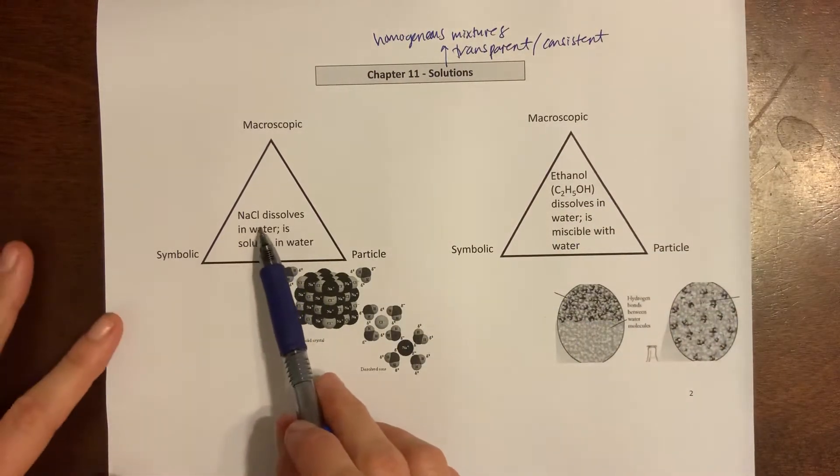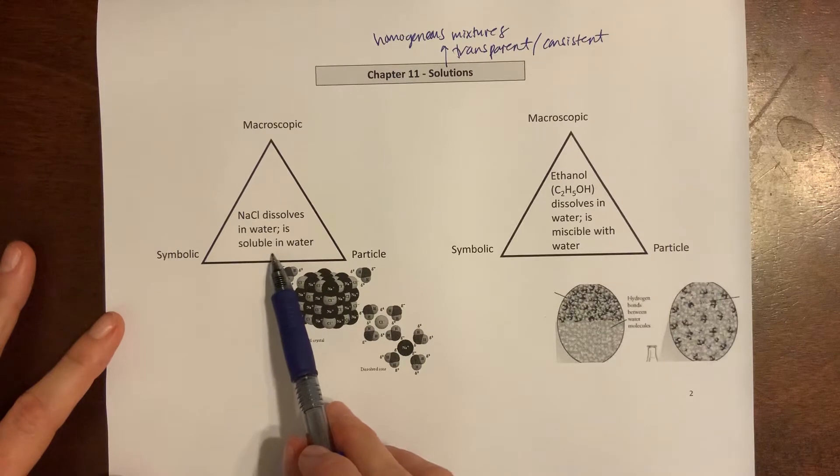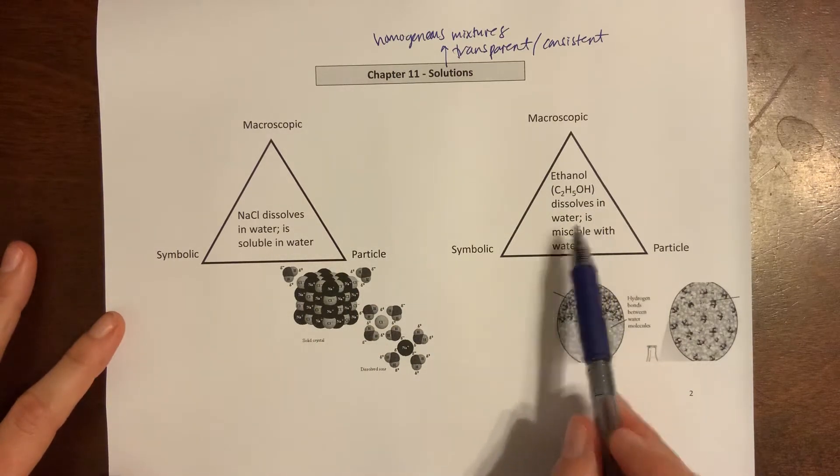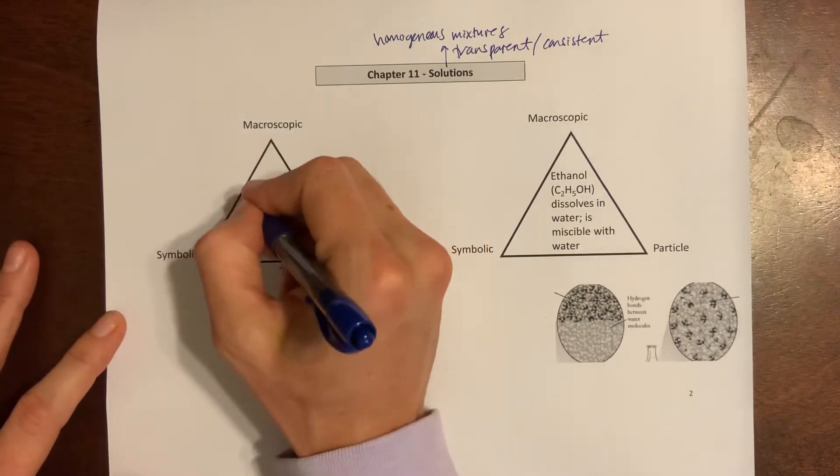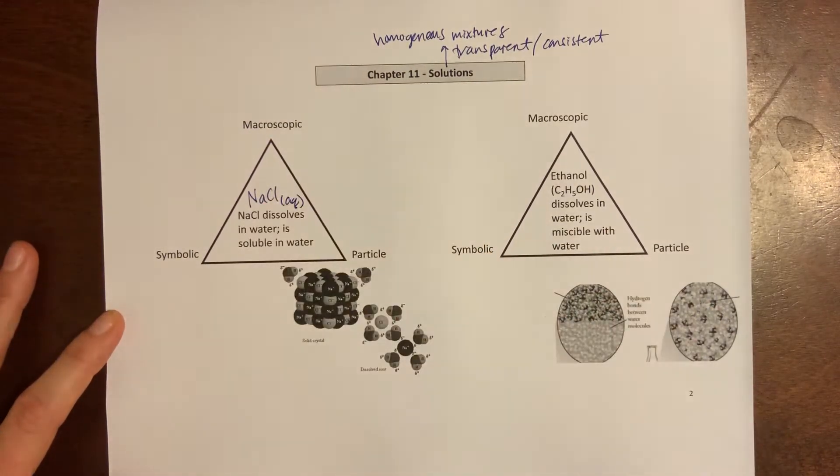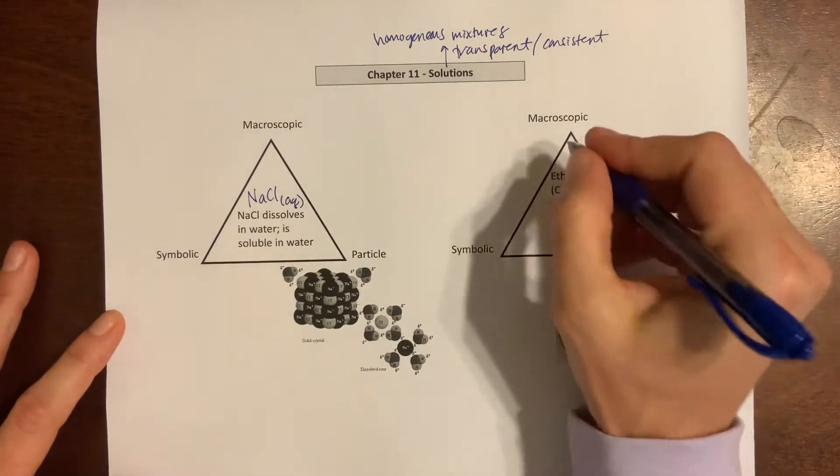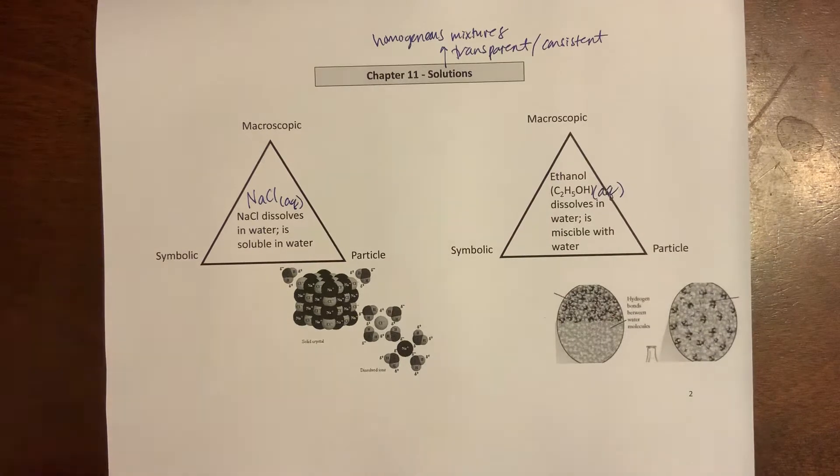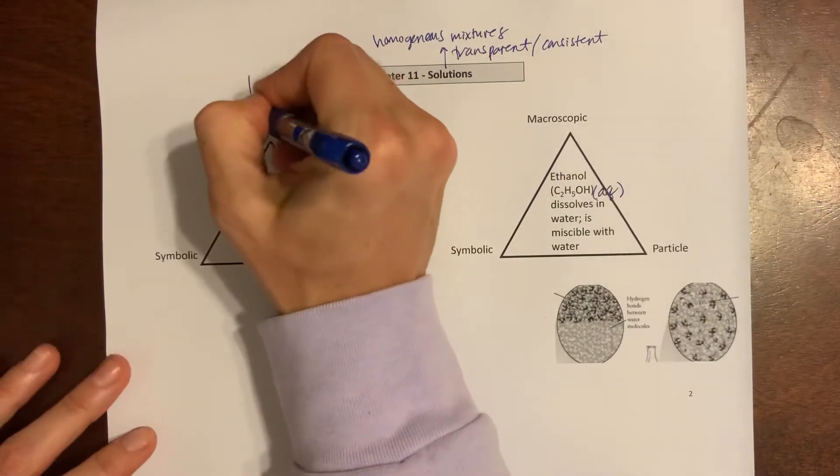We're going to look at table salt NaCl dissolved in water and we're going to look at ethanol dissolved in water as well. So this would be if I wrote it symbolically NaCl in the aqueous phase and this would be ethanol here in the aqueous phase.